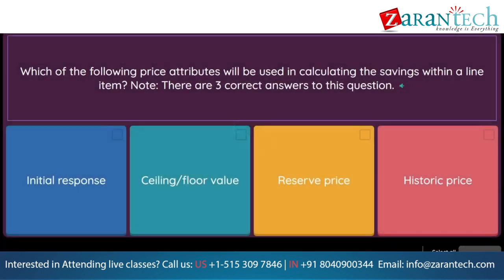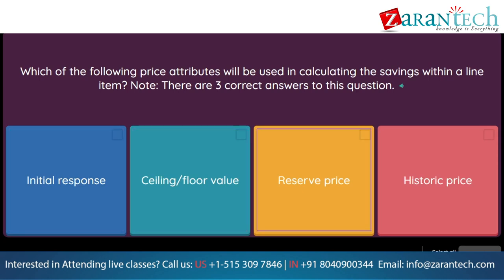Question: Which of the following price attributes will be used in calculating the savings within a line item? Note, there are three correct answers to this question. Option 1: initial response. Option 2: ceiling/floor value. Option 3: reserve price. Option 4: historic price.